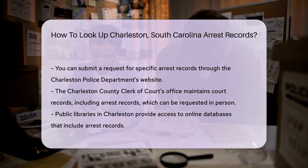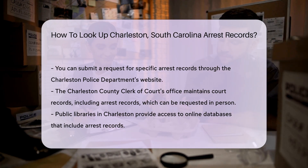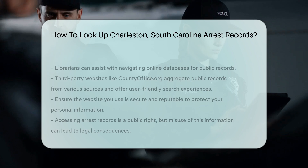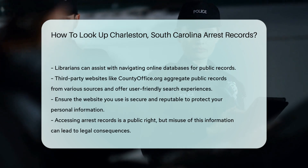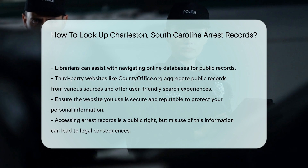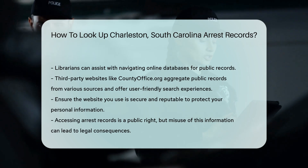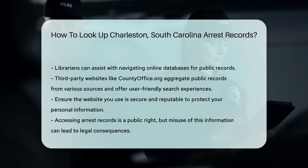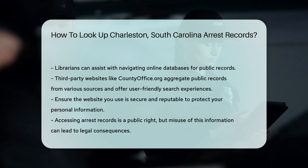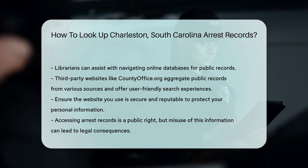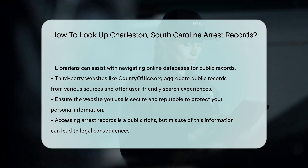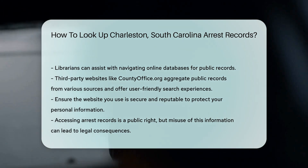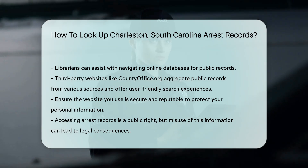For those who need more comprehensive information, third-party websites can be helpful. Websites like countyoffice.org aggregate public records from various sources. These sites often provide a more user-friendly search experience. When using online resources, always ensure the website is secure and reputable. Look for HTTPS in the URL and read reviews if available.